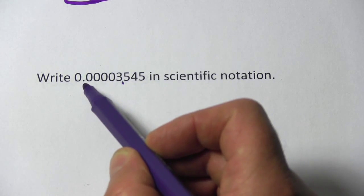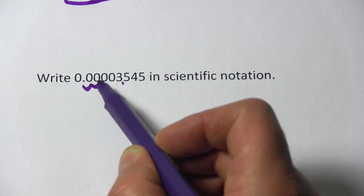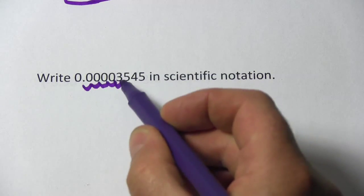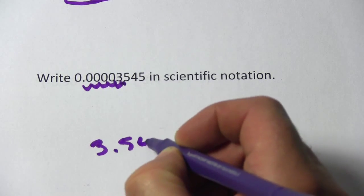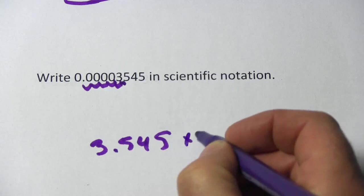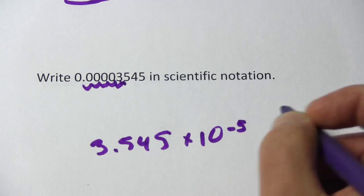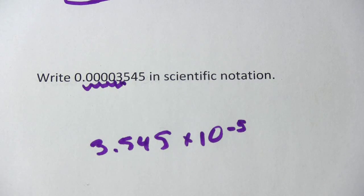So let's count how many spaces we have to move it: 1, 2, 3, 4, 5. So I can write this as 3.545 times 10 to the negative fifth. So that's a little bit of work with scientific notation with negative exponents.